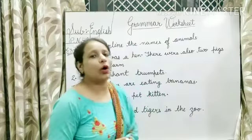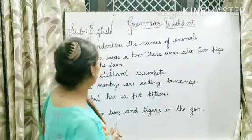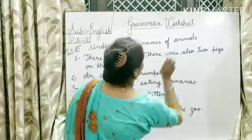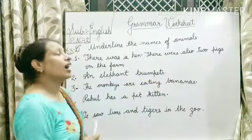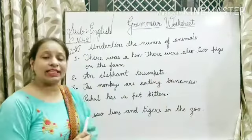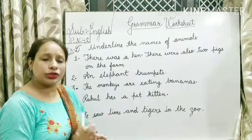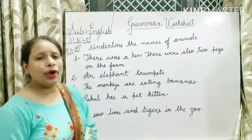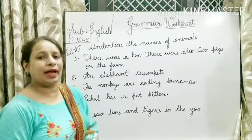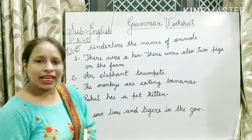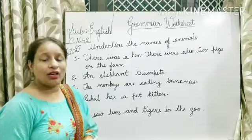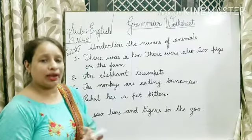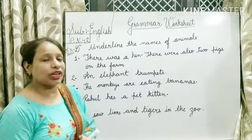Now coming to exercise number D. Underline the names of animals. Aapki ek exercise hai, ye D exercise. Ismein aapko kuch aur nahi karna hai, this is really very easy. Aapko ismein only jo animals ke naam hain, unke niche bas underline karna hai. Aapne LKG/UKG mein bhi animals ki names padhi hogi.